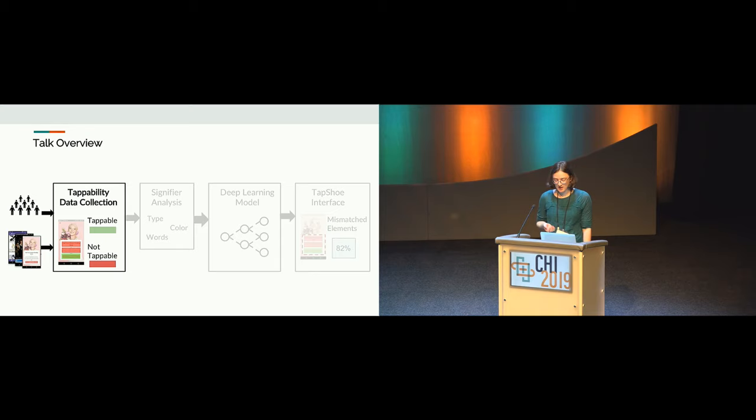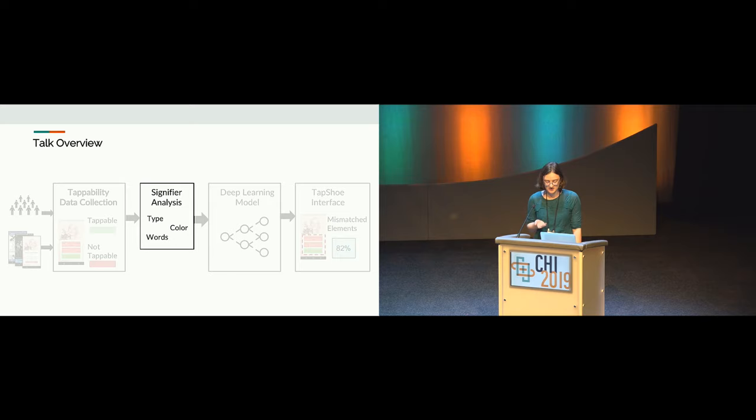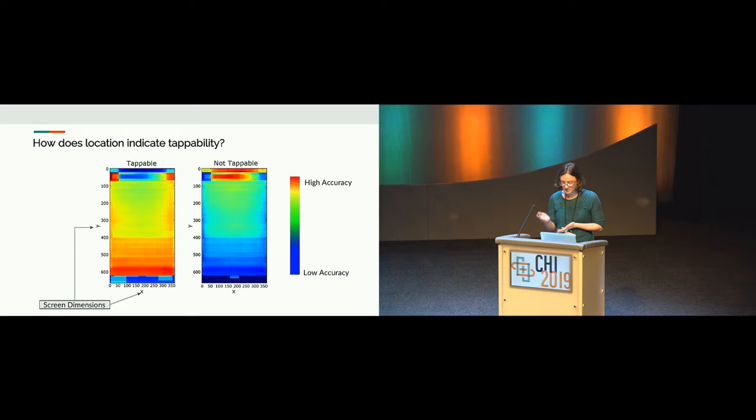Next, I'll describe a set of signifiers we analyzed — such as type, color, and words — to learn more about what signifiers workers used to distinguish tappable and not tappable elements. One signifier we analyzed was the element's location on the screen. We made a heat map of worker accuracy by location using the bounding boxes of elements, measuring accuracy against the ground truth for all tappable and not tappable interface elements. Red means high accuracy and blue means low accuracy in that area.